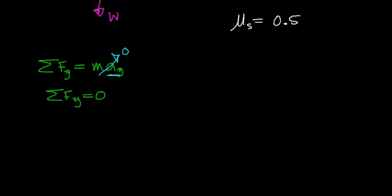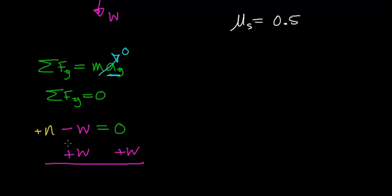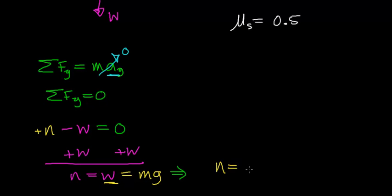There are two forces acting in the y direction: the normal force acting upward (positive y direction) and the weight force acting downward. Those two forces add up to zero, so the normal force equals the weight force. The weight force equals the mass times the gravitational acceleration, so the normal force acting on this object equals mass times gravitational acceleration.